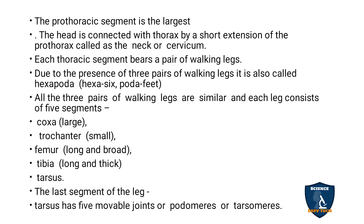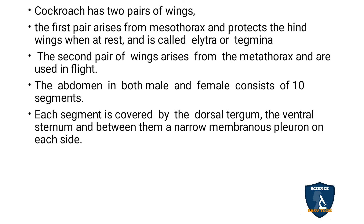The last segment of the leg, the tarsus, has five movable joints called podomeres or tarsomeres. The cockroach has two pairs of wings. The first pair arises from the mesothorax and protects the hind wings; when at rest these are called elytra or tegmina. The second pair arises from the metathorax and is used for flight.